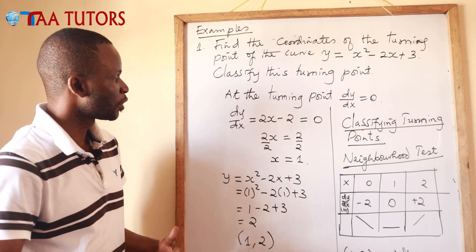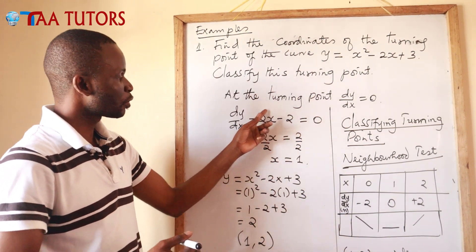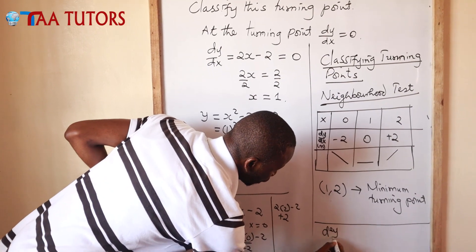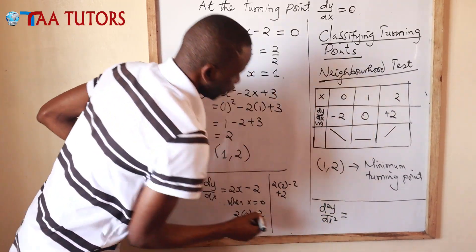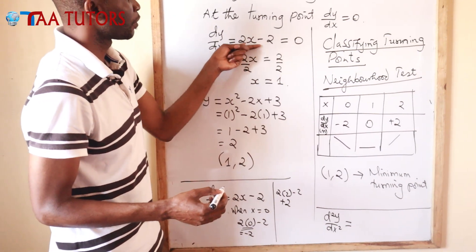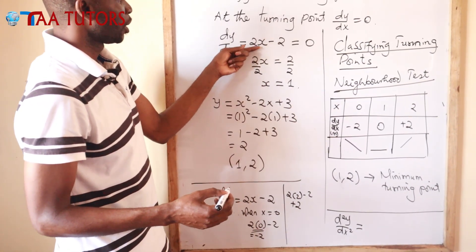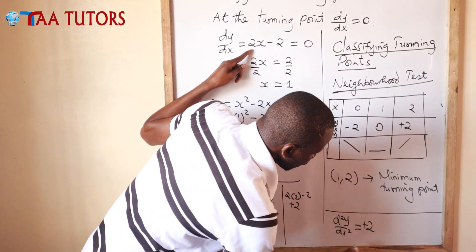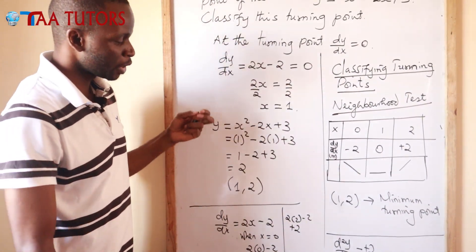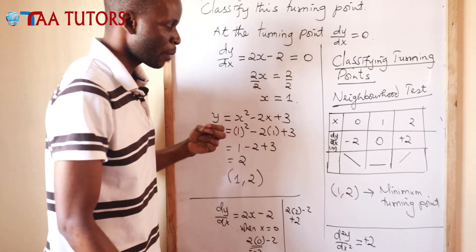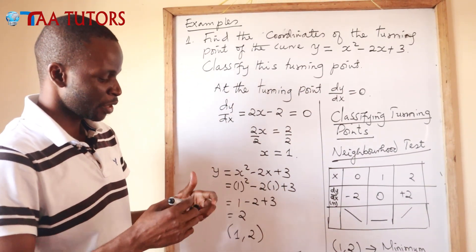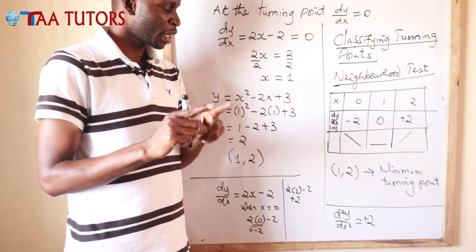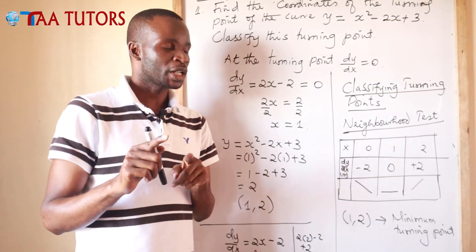We can also use the second derivative method. Differentiate the gradient function again: d squared y over dx squared. Differentiating 2x minus 2 gives 2, which is positive. If the second derivative is positive, that is a minimum turning point. If the second derivative is negative, that is a maximum turning point — it is kind of reverse. A positive second derivative gives a minimum; a negative second derivative gives a maximum.